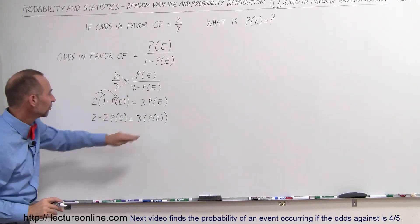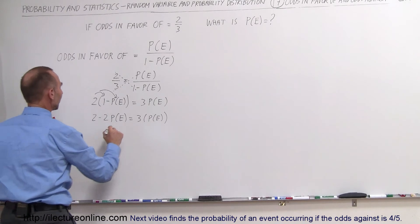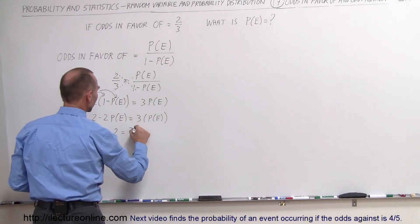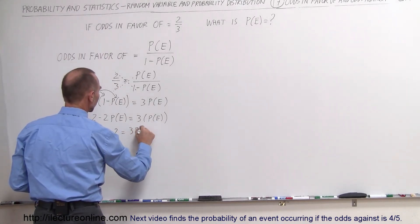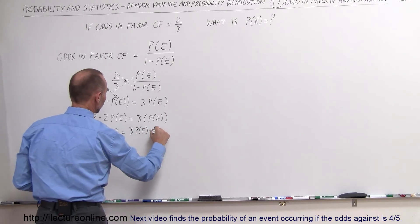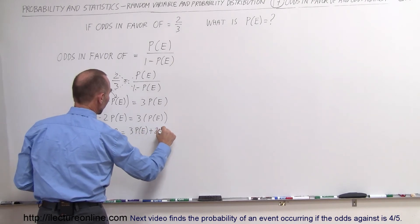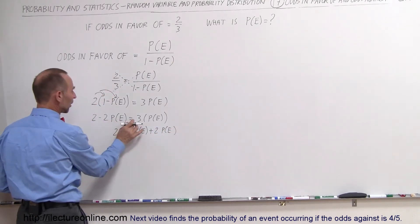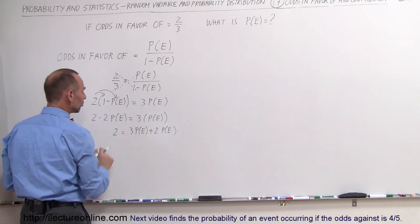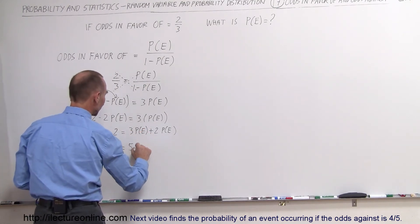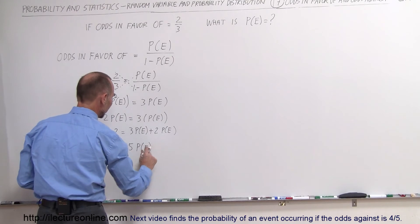Moving the term to the other side — when you move something across the equal sign, the sign changes — so two equals three times the probability of the event occurring plus two times the probability of the event occurring, which gives us two equals five times the probability of the event occurring.